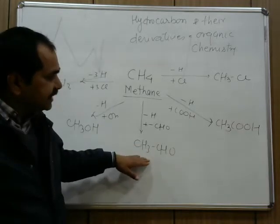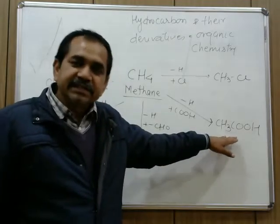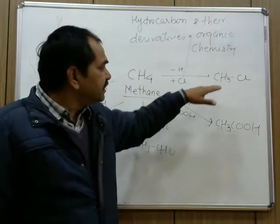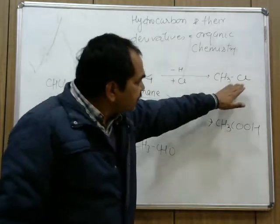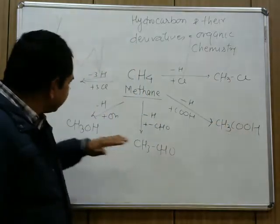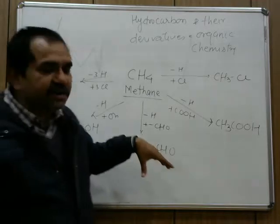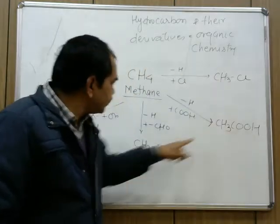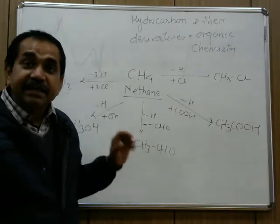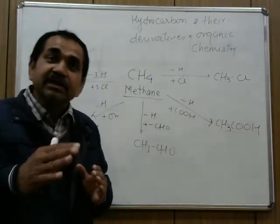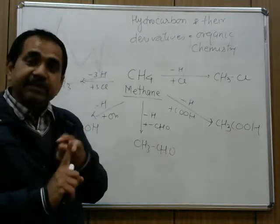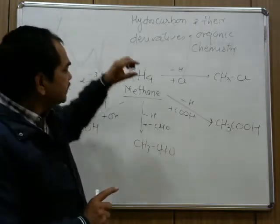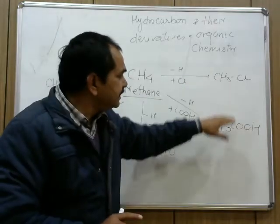Continuing the examples: we also have acetaldehyde. All these compounds — methyl chloride, acetic acid, acetaldehyde, methanol, and chloroform — have been formed by replacement of one or more hydrogens from the hydrocarbon methane, so they are all called derivatives of hydrocarbon. As per the modern view, organic chemistry is that branch of chemistry which deals with the study of hydrocarbons and their derivatives. All organic compounds are essentially hydrocarbons that have come to their current form by replacement of one or more hydrogen atoms by another atom or group.